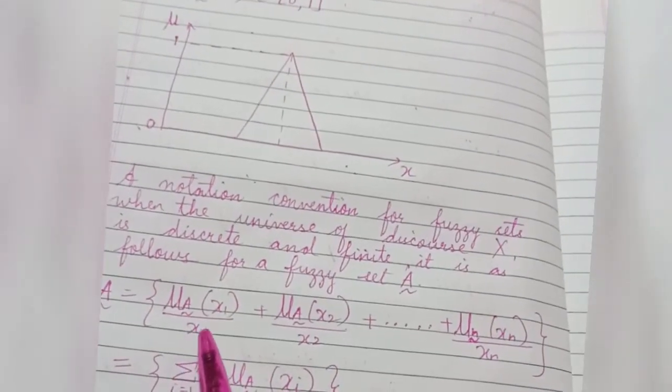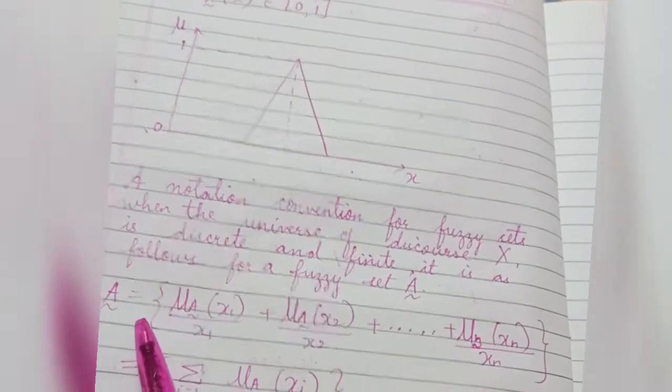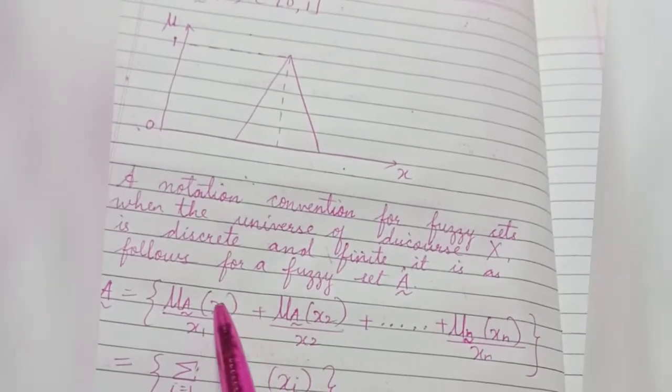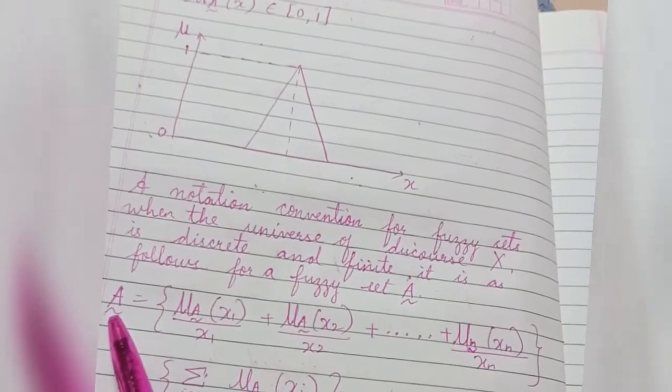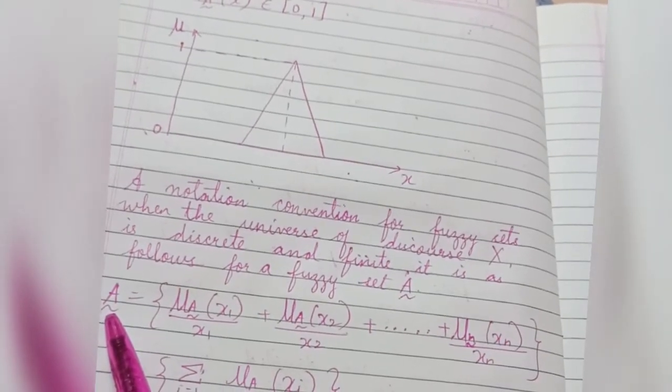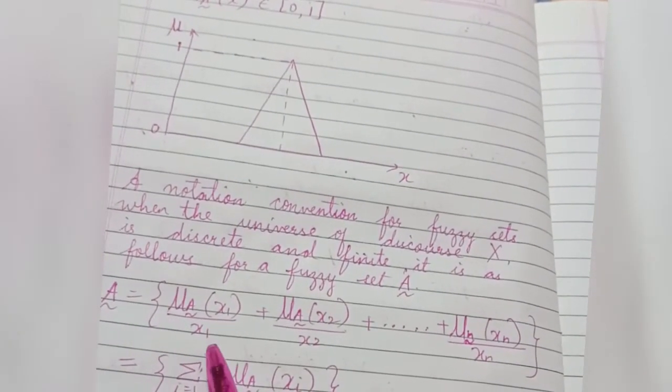So X1 is the element of the universe, whereas in numerator, this is the membership value in set A associated with the element of universe X1.